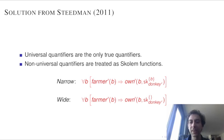Steedman 2011 replaces all existential quantifiers by Skolem functions and we get two different readings by Skolem functions getting two different arguments.